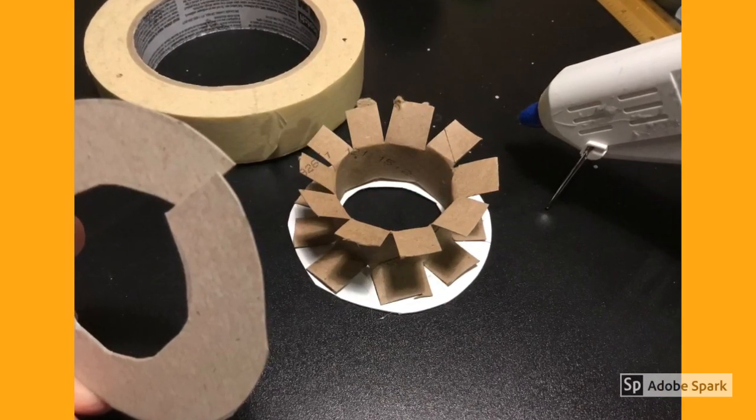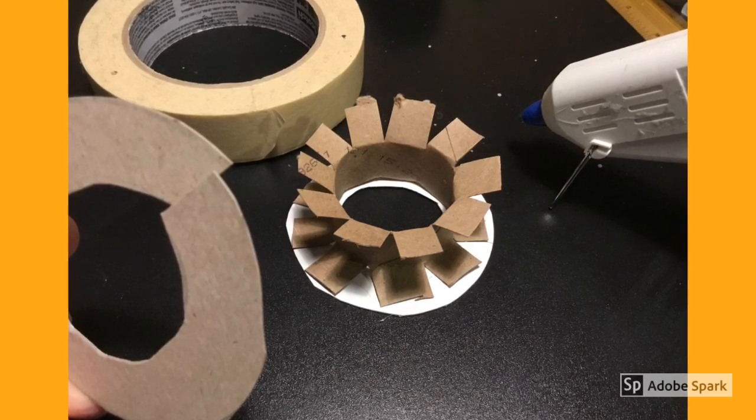Using your adhesive, secure each disc to the flange tabs on your small cylinder.